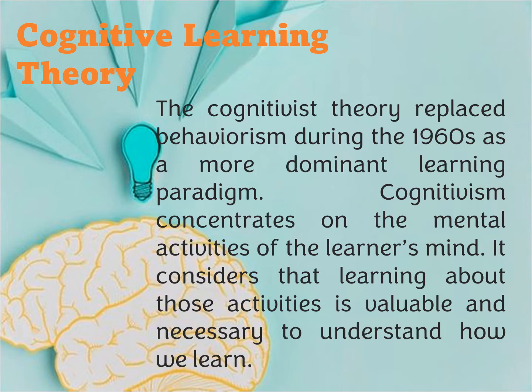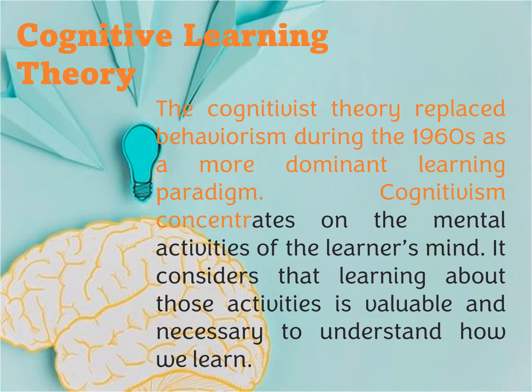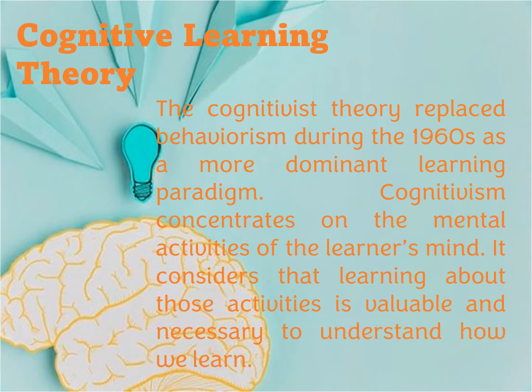The next theory is the cognitive learning theory. The cognitive theory replaced behaviorism during the 1960s as the more dominant learning paradigm. Cognitivism concentrates on the mental activities of the learner's mind and considers that learning about those activities is valuable and necessary to understand how we learn. To understand cognitive learning theory, it is important to learn the term metacognition — the awareness of your brain's thoughts and thought processes — which is the basis for cognitive learning theory.